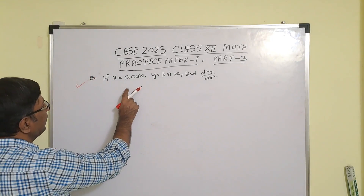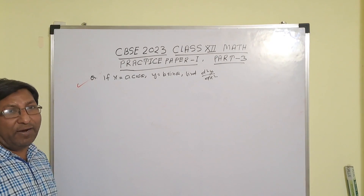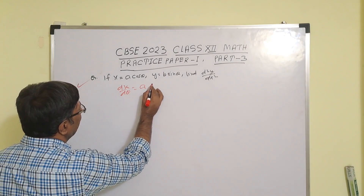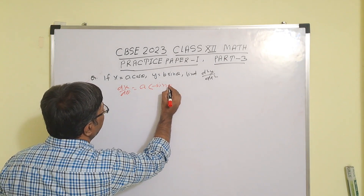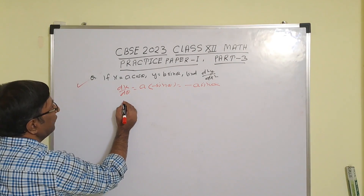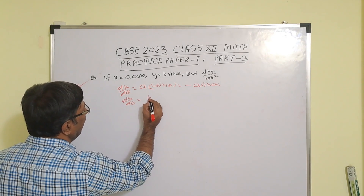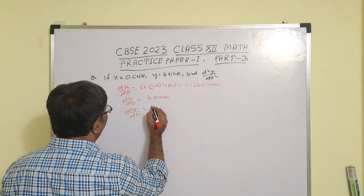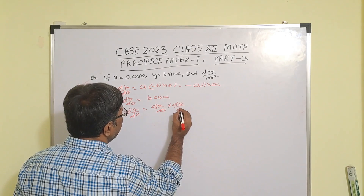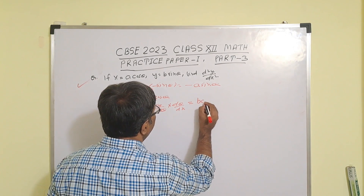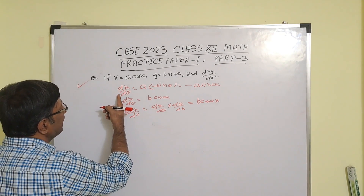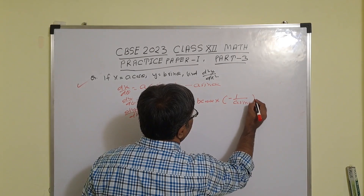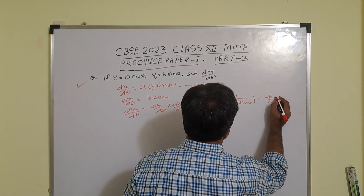Find d²y/dx² for x = a·cosθ and y = b·sinθ. First find dy/dx: dx/dθ = −a·sinθ and dy/dθ = b·cosθ. So dy/dx = dy/dθ × dθ/dx = b·cosθ × (−1/(a·sinθ)) = −(b/a)·(cosθ/sinθ), which simplifies to −(b/a)·cosθ over sinθ.